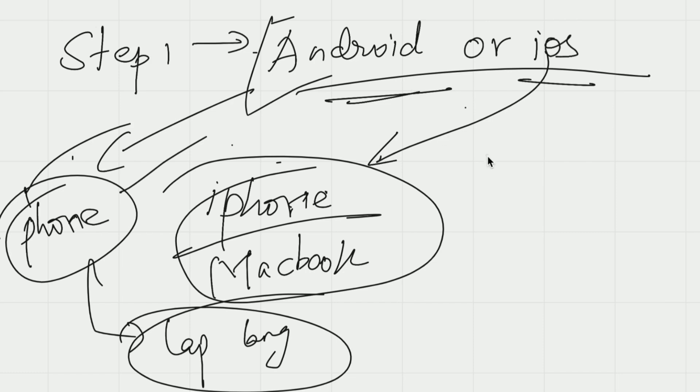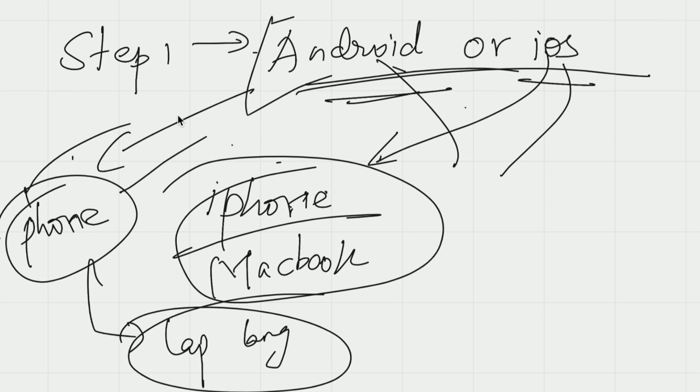Comparatively, both Android and iOS have equal scope because any major startup or company has openings for both — their users are on both Android and iOS, so they need both developers. But in this video, we are going to look only at Android resources and the Android roadmap.